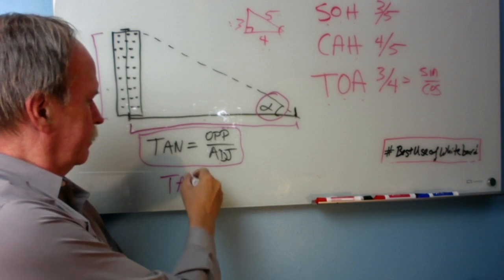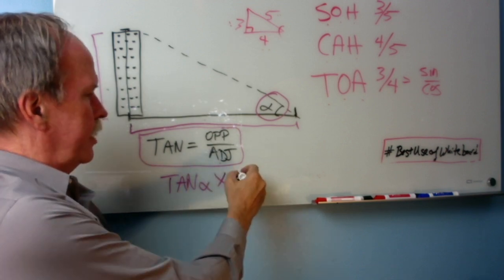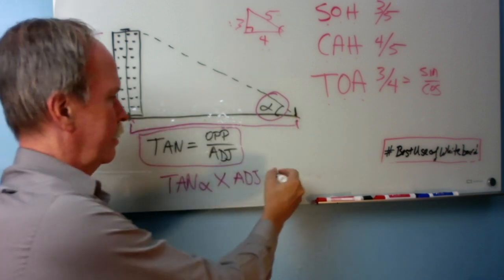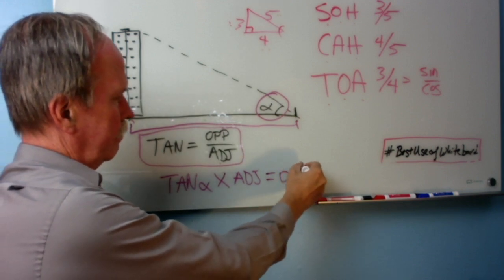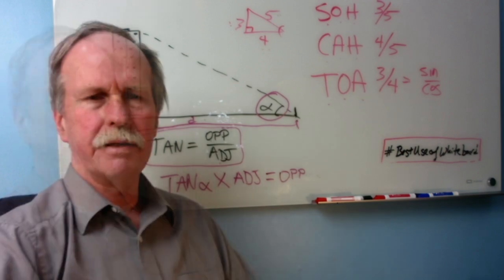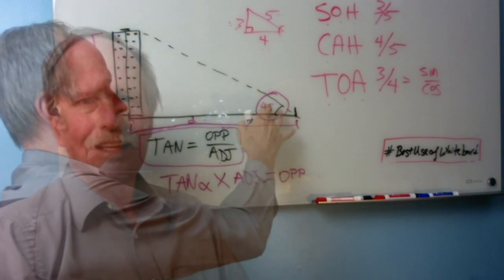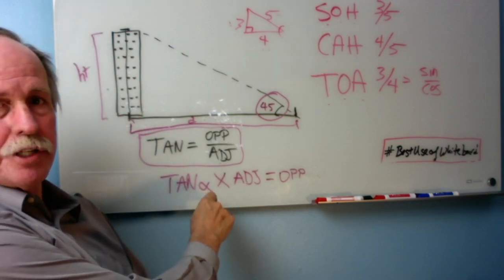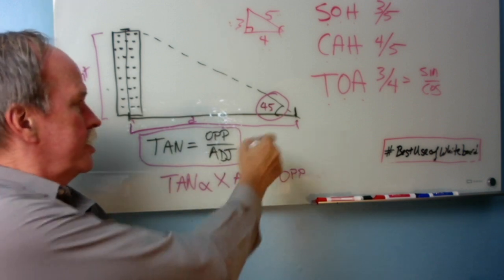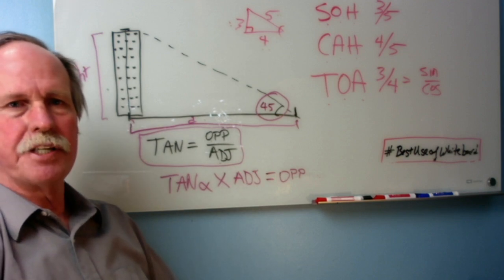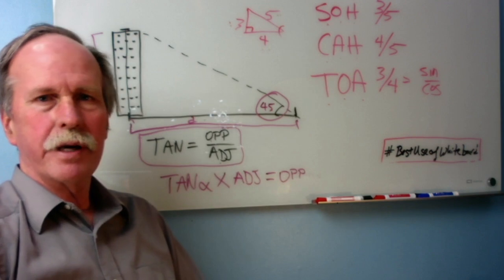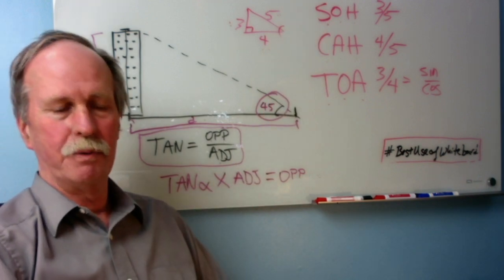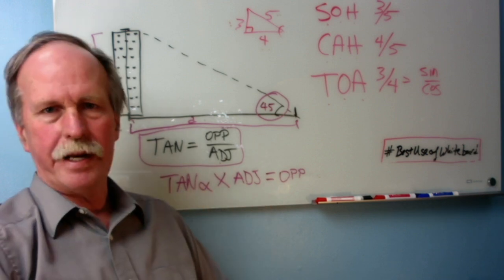So tangent angle alpha times the adjacent which is the distance from where we are to the base of the building equals the opposite side which is the height of the building. Now you recall from a 45 degree angle that however far you were to the flagpole that's how high the flagpole was if the top of the flagpole was 45 degrees from where you were standing. Same principle right here but it works for any angle.